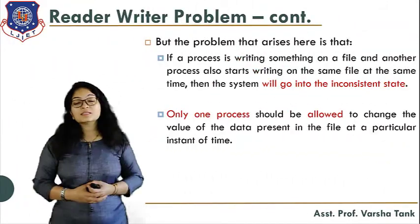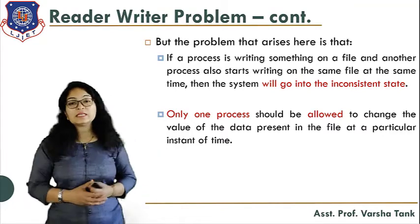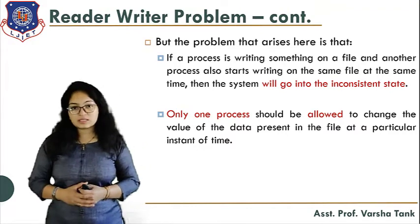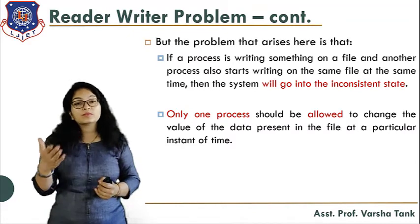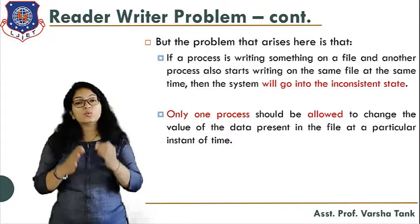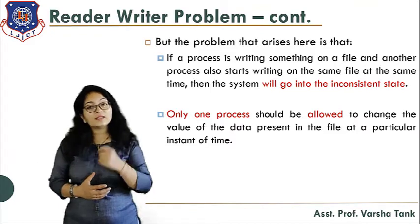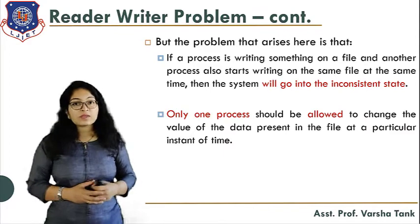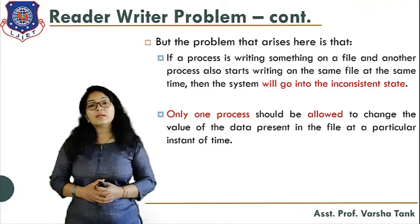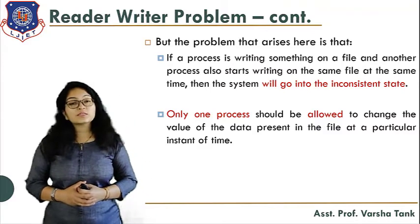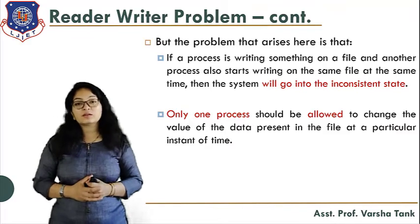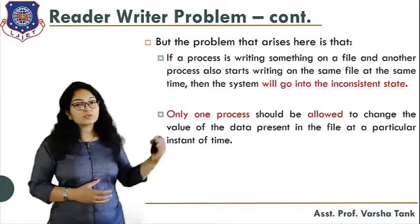Now, what problems arise with read and write? The first problem is: if one process is writing something on a file and another process also starts writing on the same file, it will create inconsistency. Which data will be correct — the data written by P1 or P2? That leads to an inconsistent state. So only one process should be allowed to change the value of the data at a particular time. If P1 is allowed, P2 should be blocked.